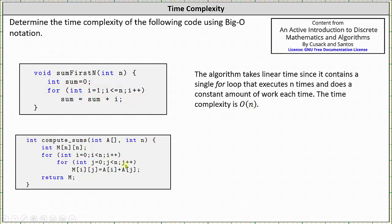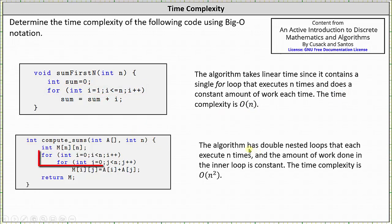And for the last example, the algorithm has double nested loops that each execute n times, and the amount of work done in the inner loop is constant. The time complexity is big O of n squared. I hope you found this helpful.